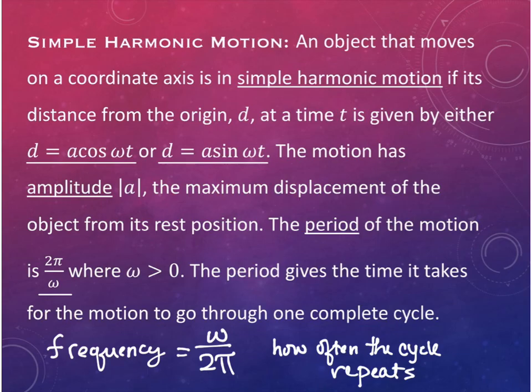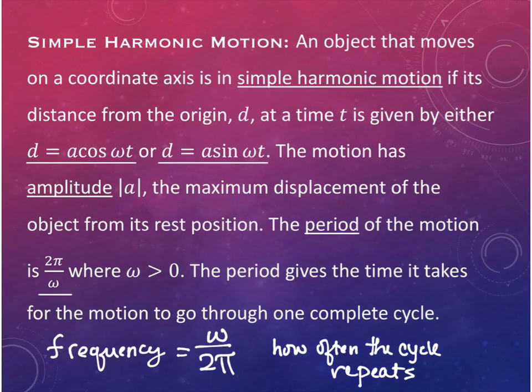A good image for this is Newton's cradle - the balls where you pull one to the side and it bumps and bounces back and forth. The farthest distance it goes is the amplitude; the length of time for one complete motion relates to the frequency and period.